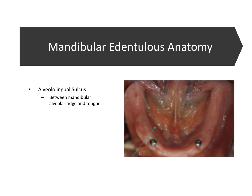Next we have the alveololingual sulcus — a very important structure on the board exam. It's located between the mandibular alveolar ridge and the tongue, and you can think of it sort of like the lingual vestibule, running from the lingual frenum posteriorly. Just like there are two S's in the word sulcus, there are two S's in this anatomical structure. Tracing the alveololingual sulcus from an aerial view, it goes in laterally away from the midline, then bumps out medially towards the midline, then goes back in laterally — forming that first S-shape.